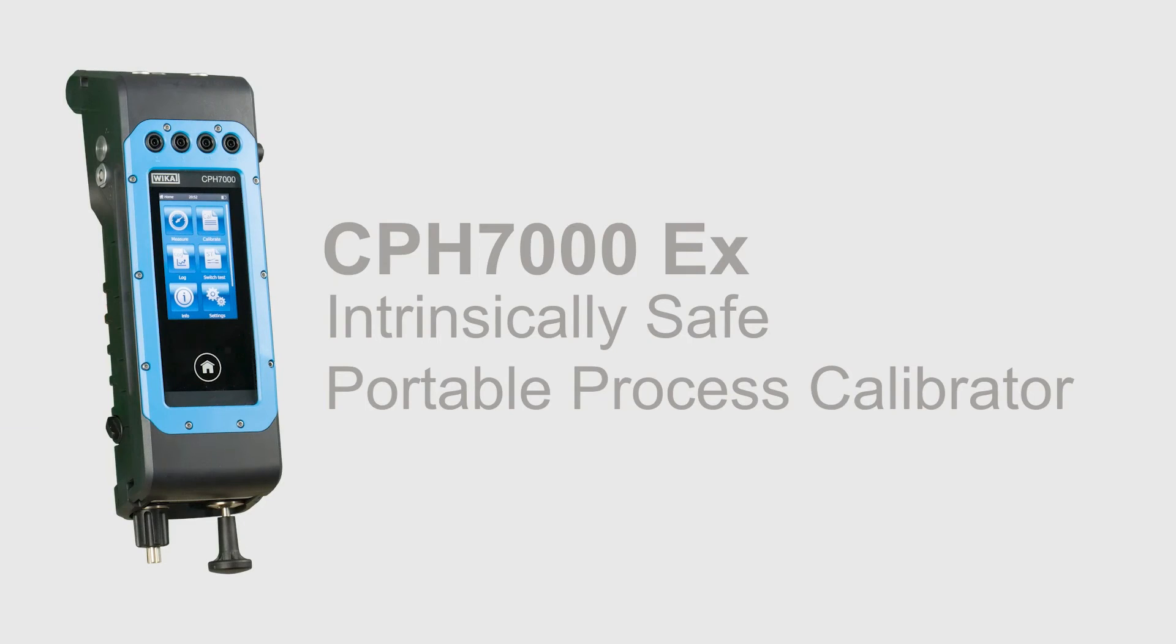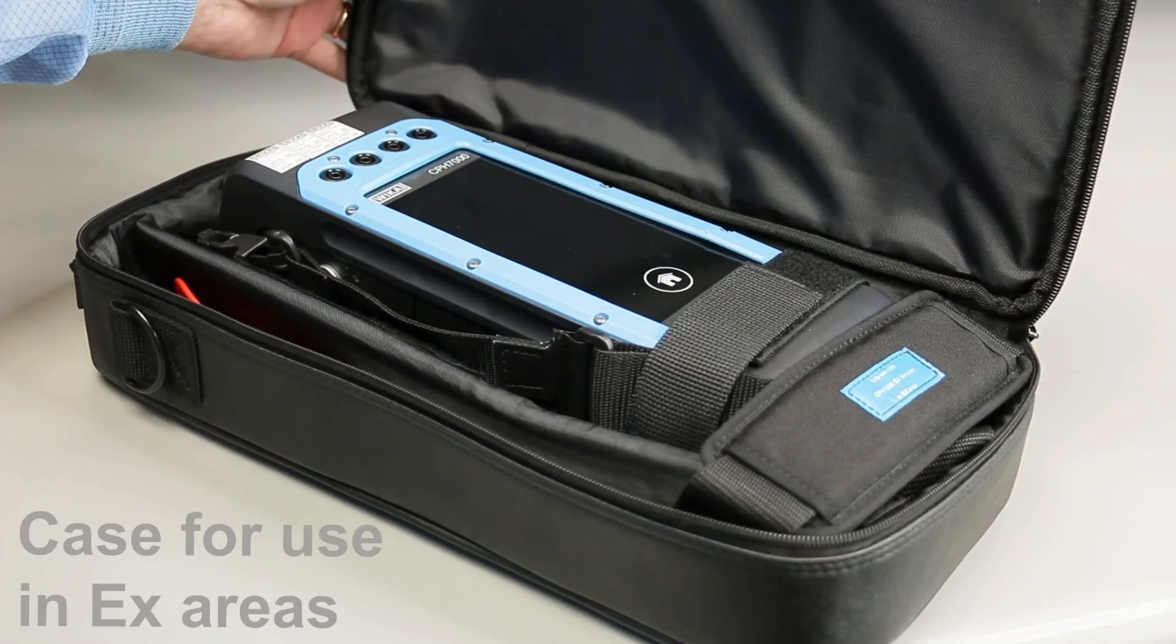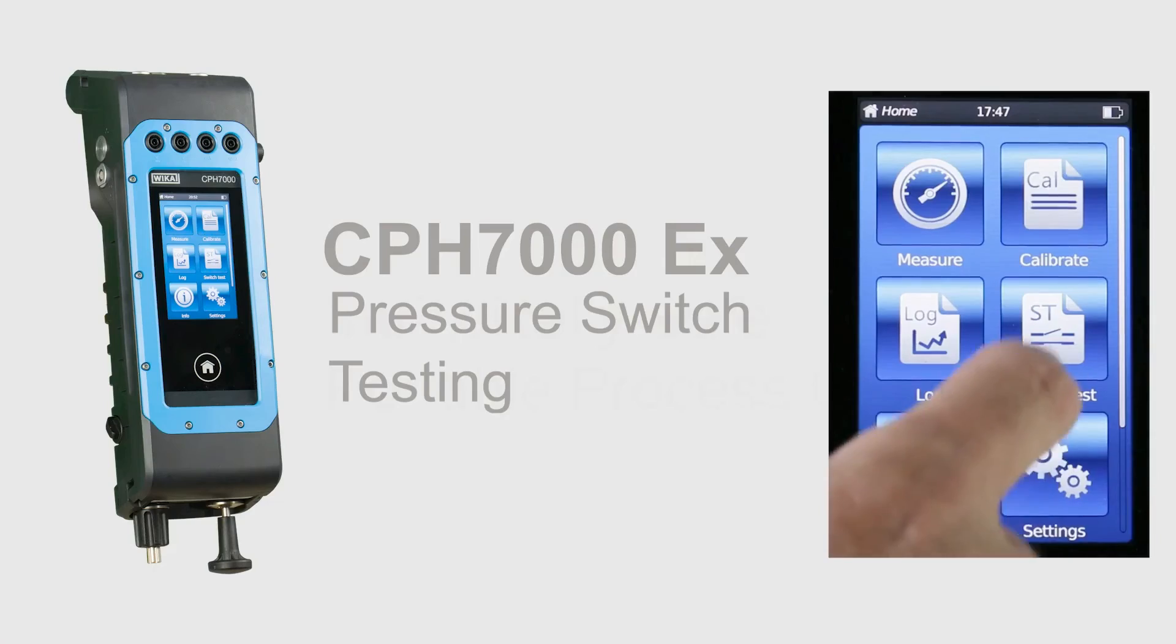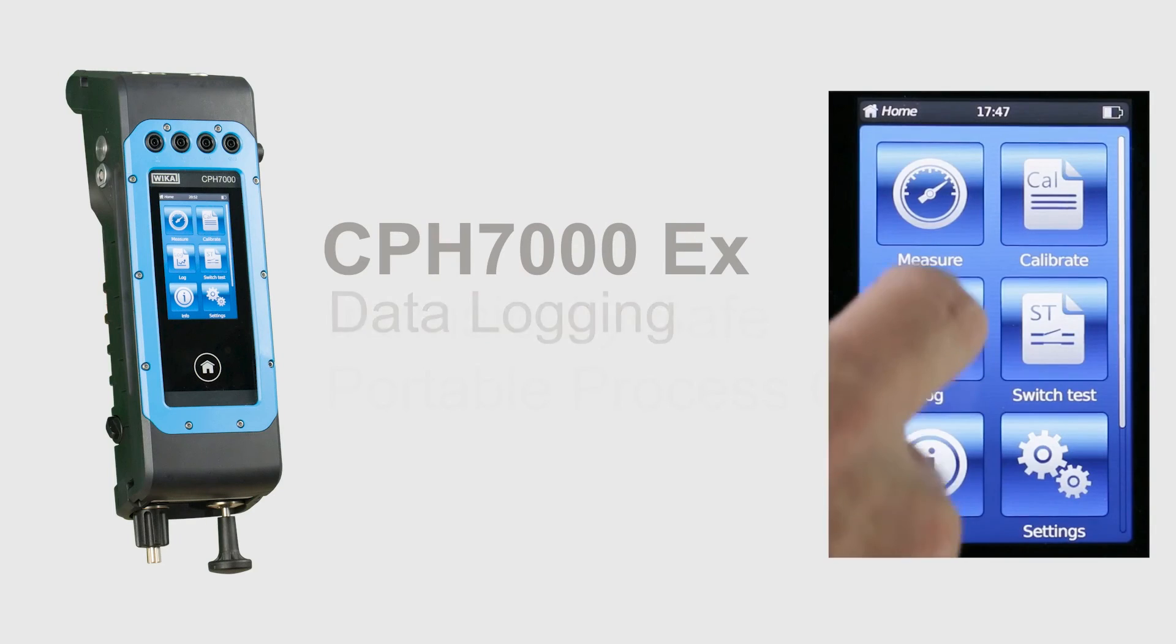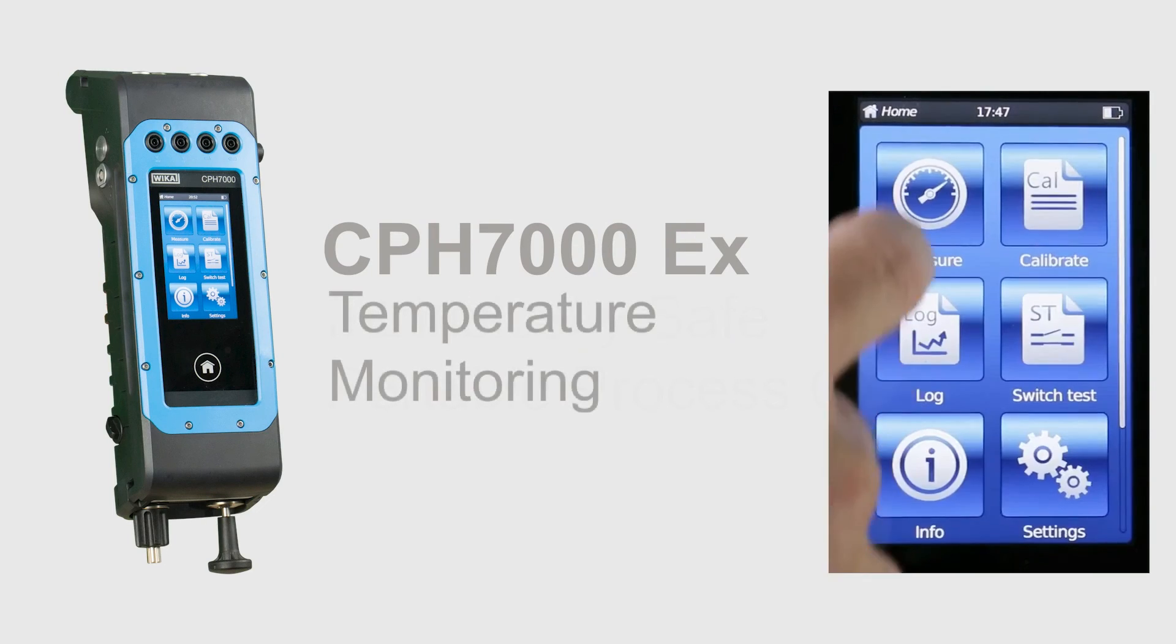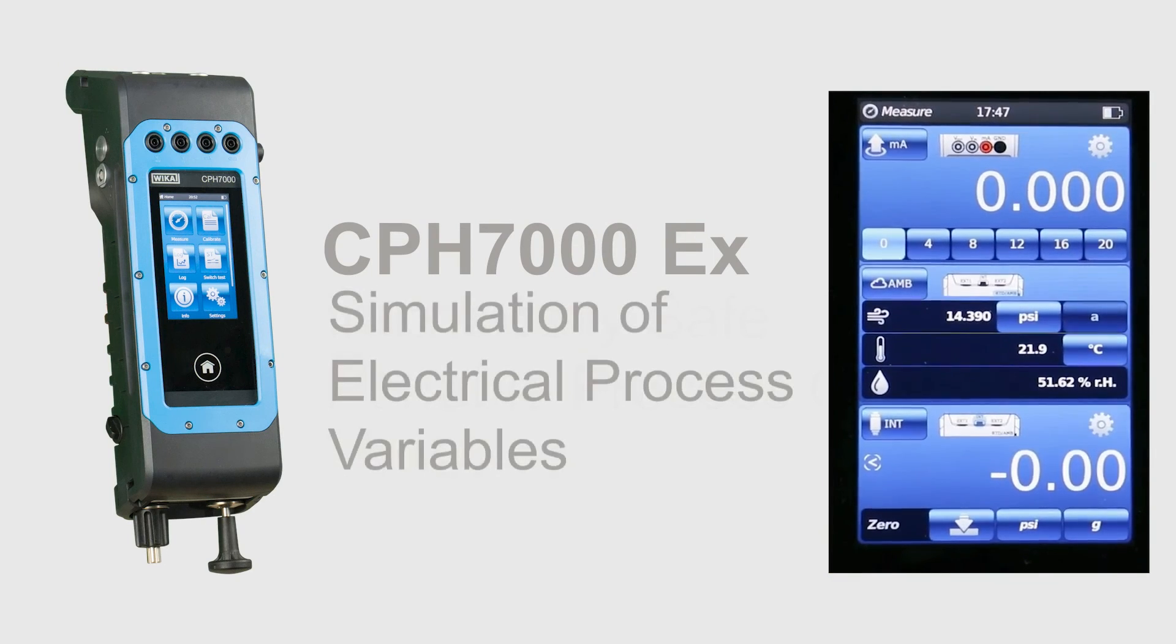The CPH-7000X is a multifunction calibrator and is used in a variety of calibration and measurement functions on-site in hazardous environments, including pressure switch testing and data logging, plus temperature monitoring and simulation of electrical process variables.